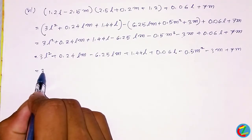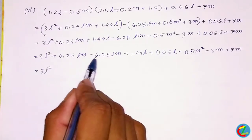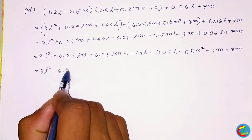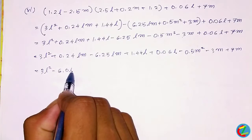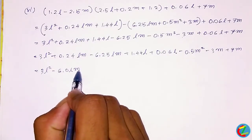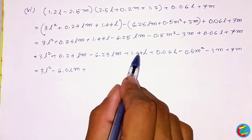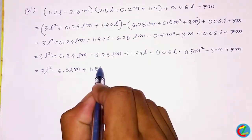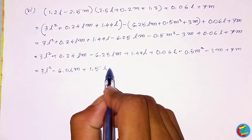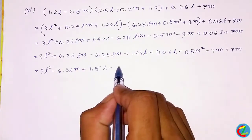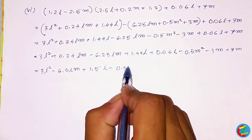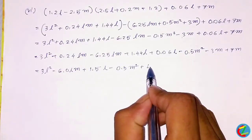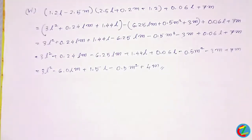Let's get started. We are going to add 2L squared, plus 0.2Lm, or minus 6.25Lm, minus 6.0Lm. So we are going to get 1.44L plus 0.06L, giving 1.5L. Then add 0.5M squared plus 4M.